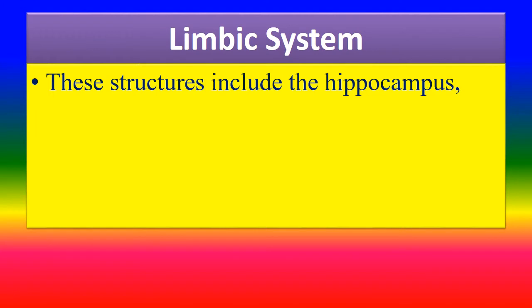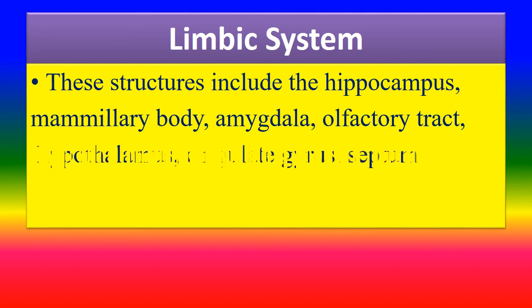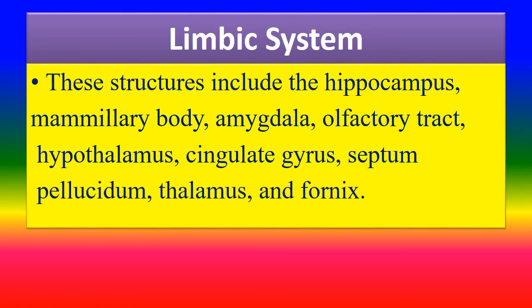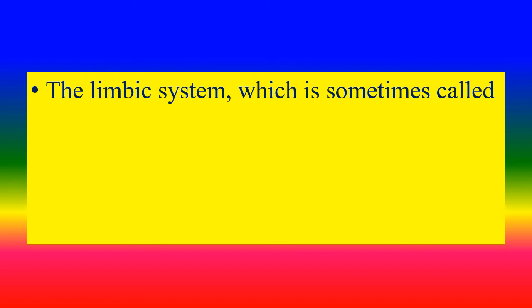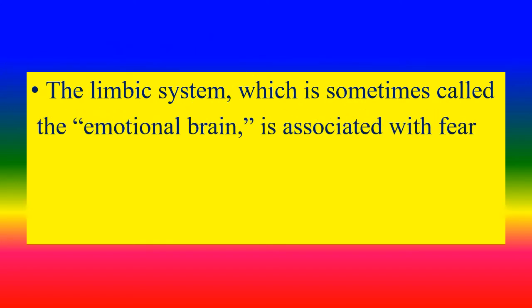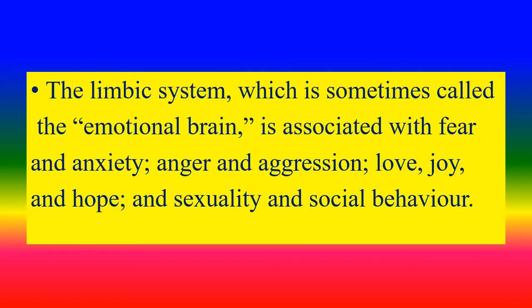The limbic system structures include the hippocampus, mammillary bodies, amygdala, olfactory tract, hypothalamus, cingulate gyrus, septum pellucidum, thalamus, and fornix. The limbic system, sometimes called the emotional brain, is associated with fear, anxiety, anger, aggression, love, joy, hope, sexuality, and social behaviour.